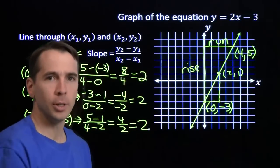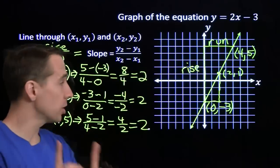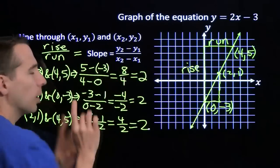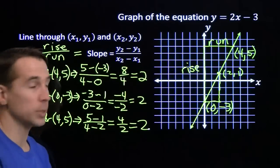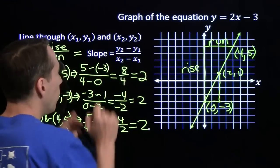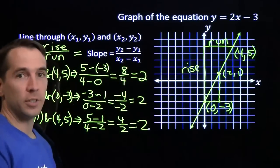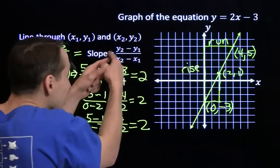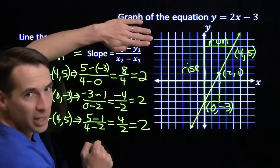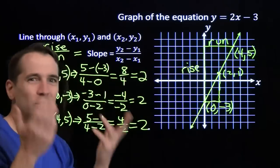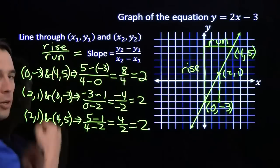Have we proven that we'll always get 2? No, not yet — but we will. Let's look again at this formula and talk about why we chose these variables. These little numbers are called subscripts. Using x1, y1, x2, y2 instead of a, b, c, d allows us to see immediately that the numerator is the difference of the y-coordinates and the denominator is the difference of the x-coordinates. If we used a, b, c, d, it would look like d minus b over c minus a, which wouldn't make intuitive sense. Whereas this way we see: difference in y-coordinates, difference in x-coordinates — rise over run.